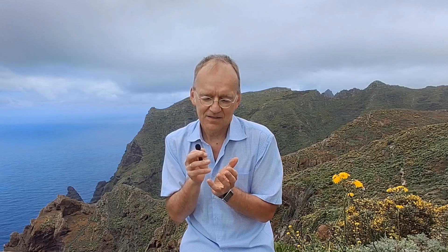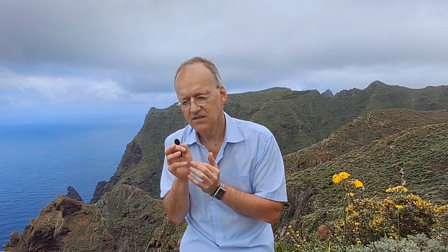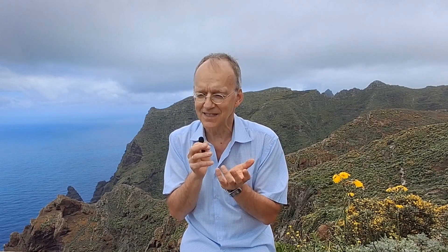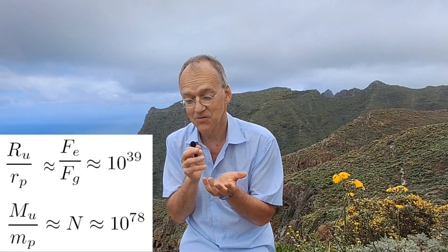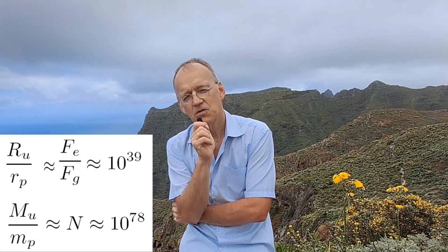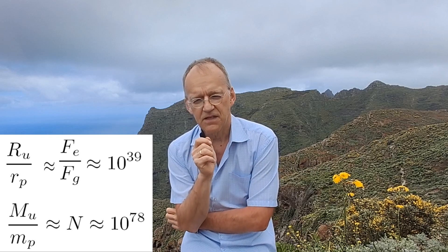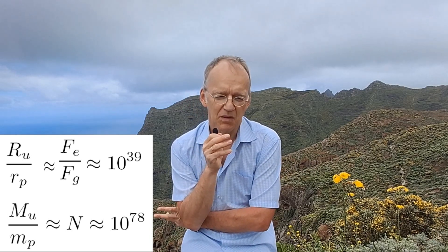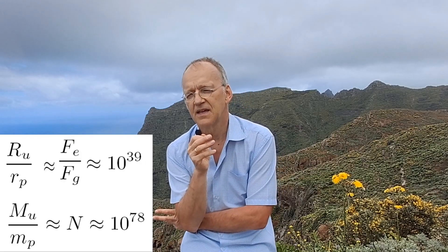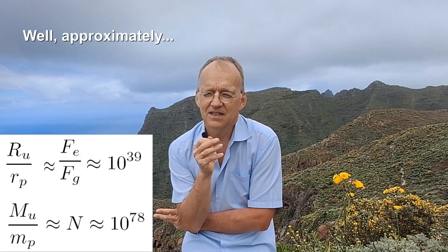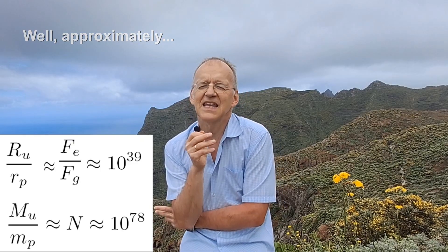You have this large number 10 to the 40 appearing in two different instances in physics, and then you have another huge number — 10 to the 80, the square of that number. Where does it show up? You divide the mass of the universe by the mass of the proton — the only stable heavy particle — or more simply, the number of particles in the universe, which is essentially 10 to the 80, the square of that number. It cannot be coincidence.